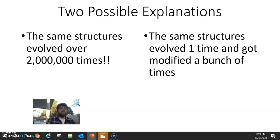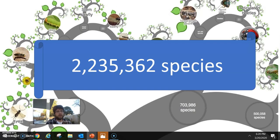Or, that structure of all those structures came together one time and has slowly been modifying over the course of Earth's history, over a billion plus years into the 2,235,362 species we have today.